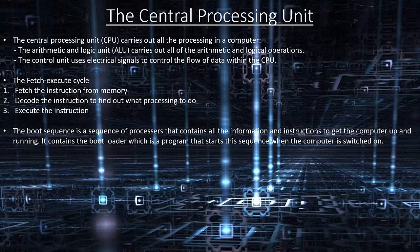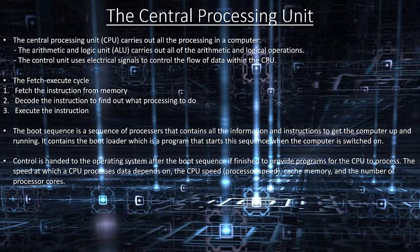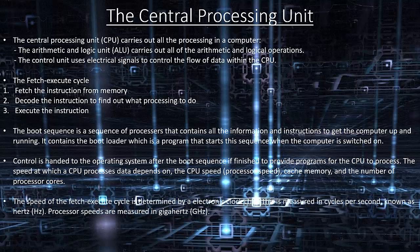The boot sequence contains the boot loader, which is a program that starts this sequence when the computer is switched on. Control is handed to the operating system after the boot sequence is finished, to provide programs for the CPU to process. The speed at which a CPU processes data depends on the CPU speed, the cache memory and the number of processor cores. The speed of the fetch-execute cycle is determined by an electronic clock chip, measured in cycles per second known as hertz. Processor speeds are measured in gigahertz.